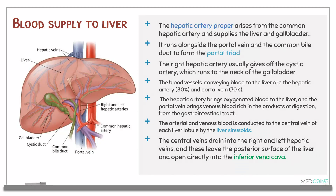The hepatic artery proper usually arises from the common hepatic artery and supplies the liver and the gallbladder. This hepatic artery proper runs alongside the portal vein and the common bile duct to form what is known as the portal triad. The right hepatic artery usually gives off its cystic artery that runs through the neck of the gallbladder. The blood vessels conveying blood to the liver are the hepatic artery, accounting for 30% of the blood, and the portal vein, accounting for 70% of the total blood supply to the liver.